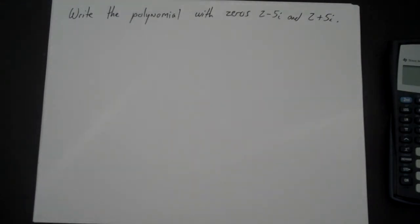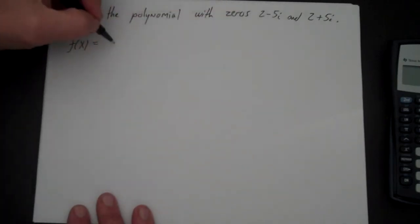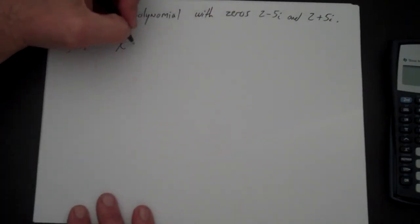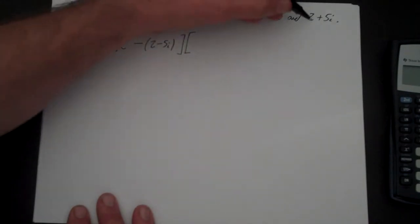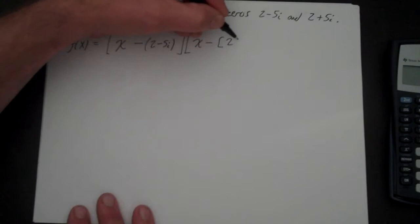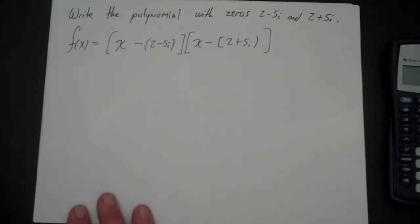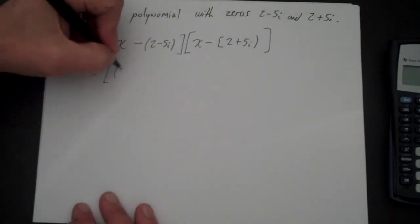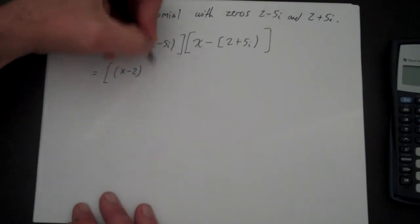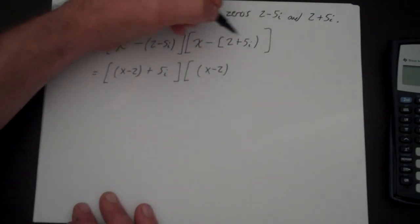Let's write the polynomial with zeros 2 minus 5i and 2 plus 5i. So f(x) equals — if the zero is 2 minus 5i then the factor is x minus (2 minus 5i), and 2 plus 5i gives x minus (2 plus 5i). I'm going to regroup these so that I have (x minus 2) plus 5i and (x minus 2) minus 5i.